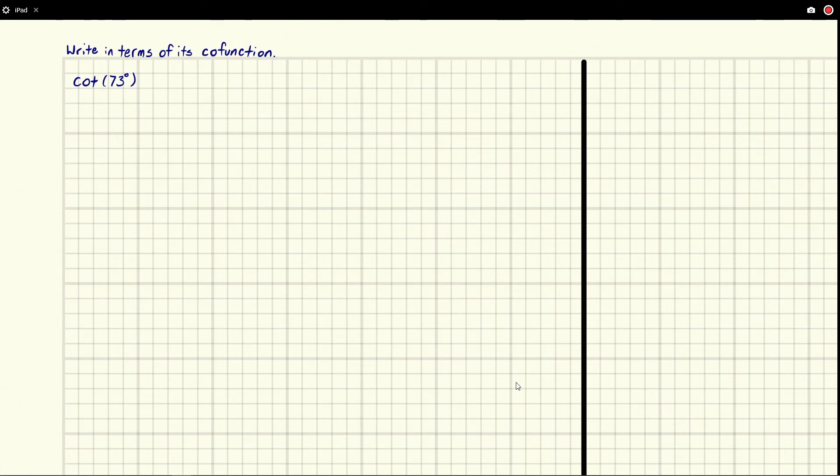Eric Burgess here and we've been told to write in terms of its co-function the function cotangent of 73 degrees. The problem itself is really easy to do if you have memorized co-functions, but if you haven't, the co-functions...